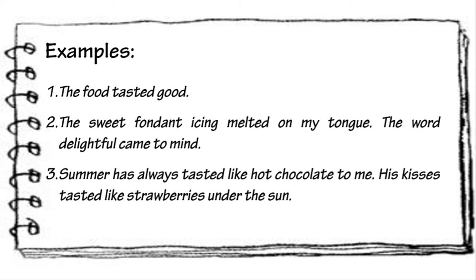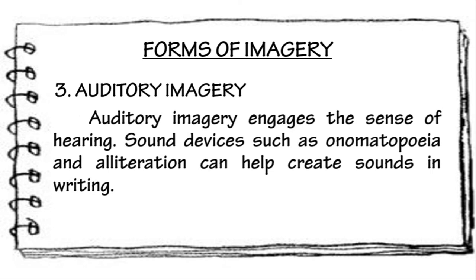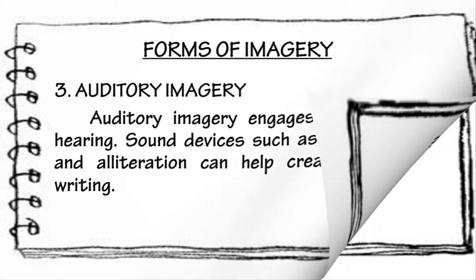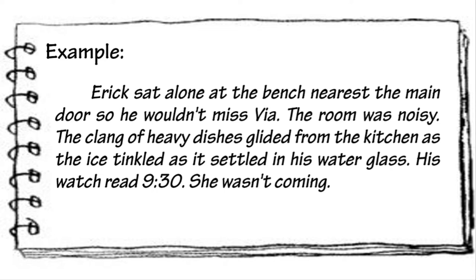The third form of imagery is the auditory imagery. Auditory imagery engages the sense of hearing. Sound devices such as onomatopoeia and alliteration can help create sounds in writing. Example: Eric sat alone at the bench nearest the main door so he wouldn't miss Villa. The room was noisy. The clam of heavy dishes glided from the kitchen as the ice tinkled as it settled in his water glass. His watch read 9:30 — she wasn't coming.